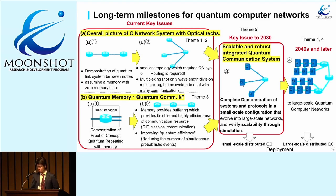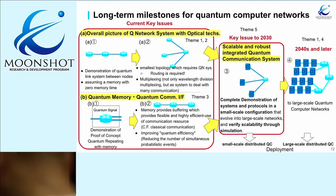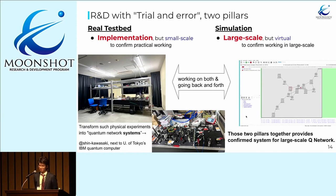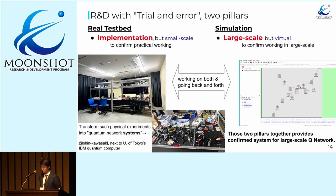Putting those two together, in 2030 we will realize the full system of the quantum network system with quantum memory, and it will lead to larger quantum networks for distributed quantum computation. We believe there are two pillars: real testbed implementation at small scale to confirm practical working, and simulation to confirm large-scale working. Those two pillars together provide a confirmed system for large-scale quantum networks. We have a testbed space in Shin-Kawasaki, which is close to Tokyo.